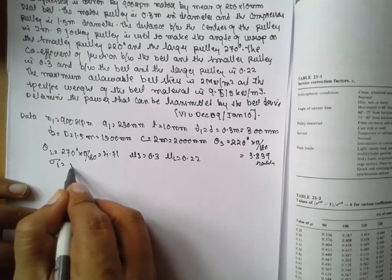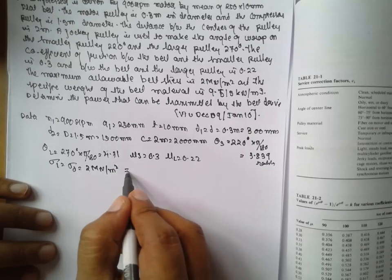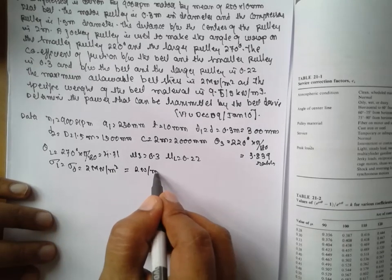And sigma 1 is nothing but sigma D equals 2 mega newton per mm square. It is nothing but 2 newton per mm square, one and same.